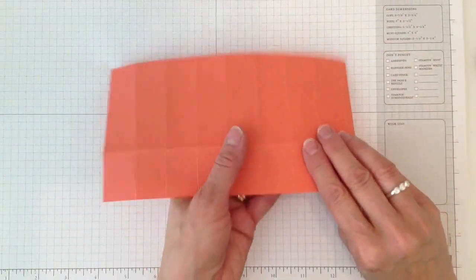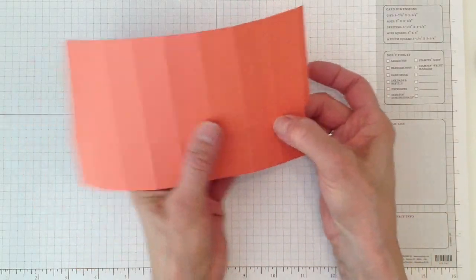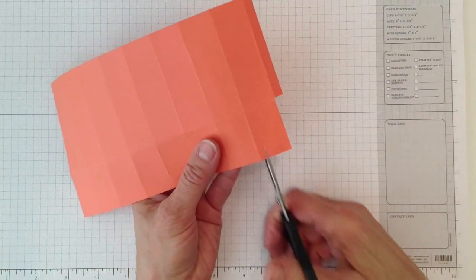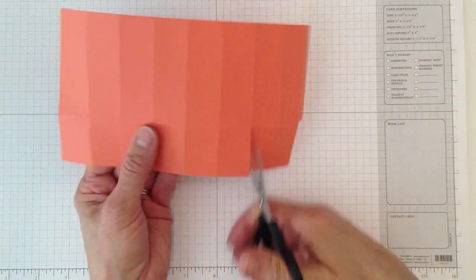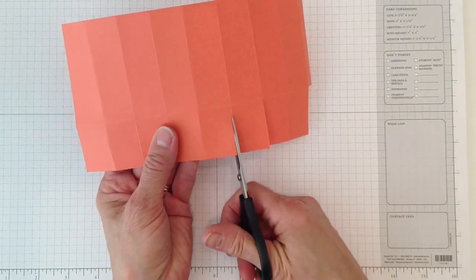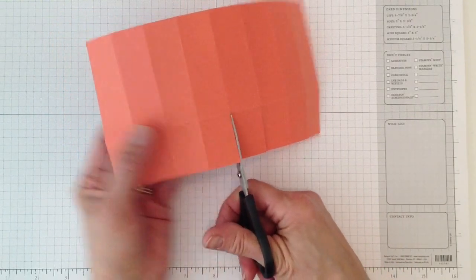And what we're going to do is we're going to cut each one of these lines up to this fold right here. So we're just going to cut each one all the way up to that score line, the one and a half inch score line.